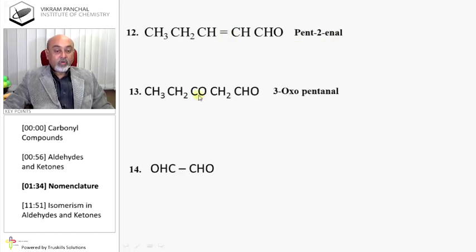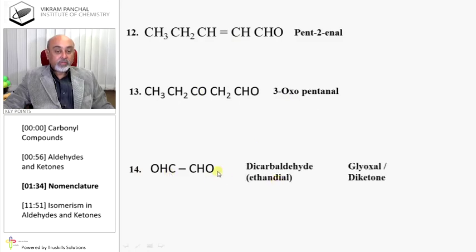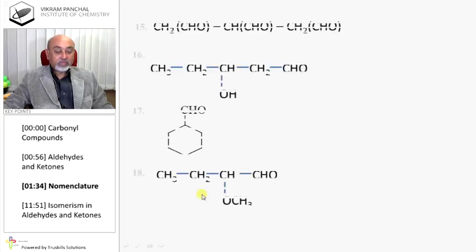CO on the third carbon, so it is 3-oxopentanal. There are two CHO groups, so it is a dicarbaldehyde or ethanedial. The common name is glyoxal or diformyl.